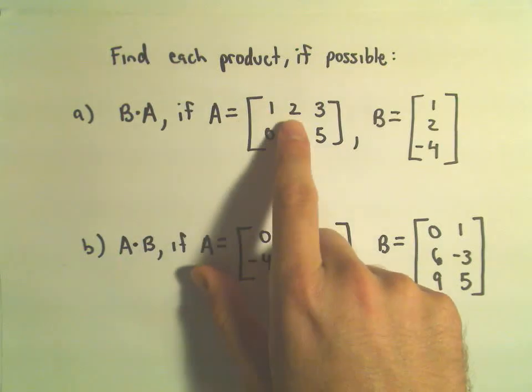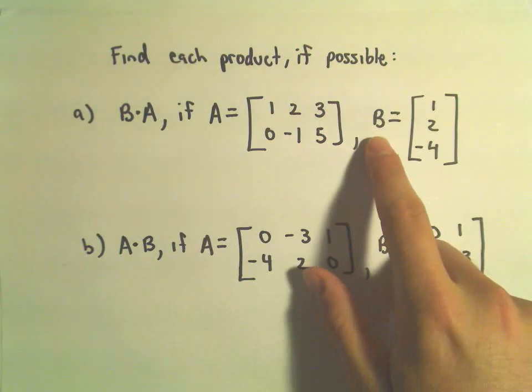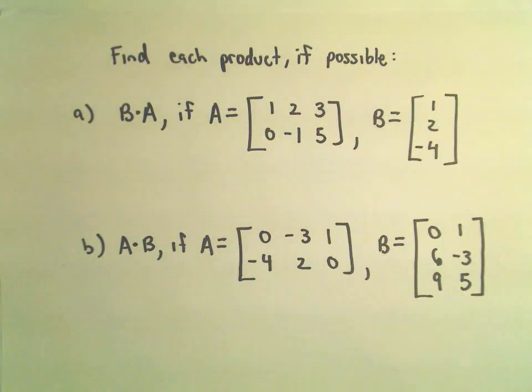Matrix A is given by 1, 2, 3, 0, negative 1, 5, and matrix B is given by 1, 2, 4.